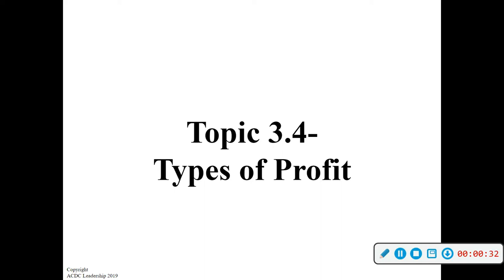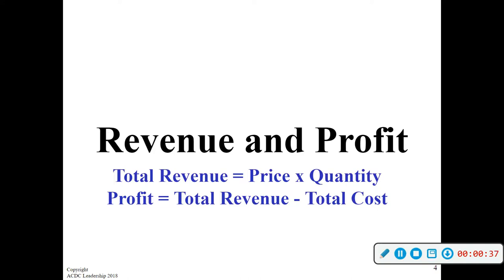It gives you two simplified formulas. Total revenue is just price times quantity — the total amount of money the business brings in. So it's the number they sold multiplied by the price they sold it for. If you sold 25 units at four dollars a piece, total revenue is a hundred dollars. Profit is how much money they get to keep after subtracting their costs.